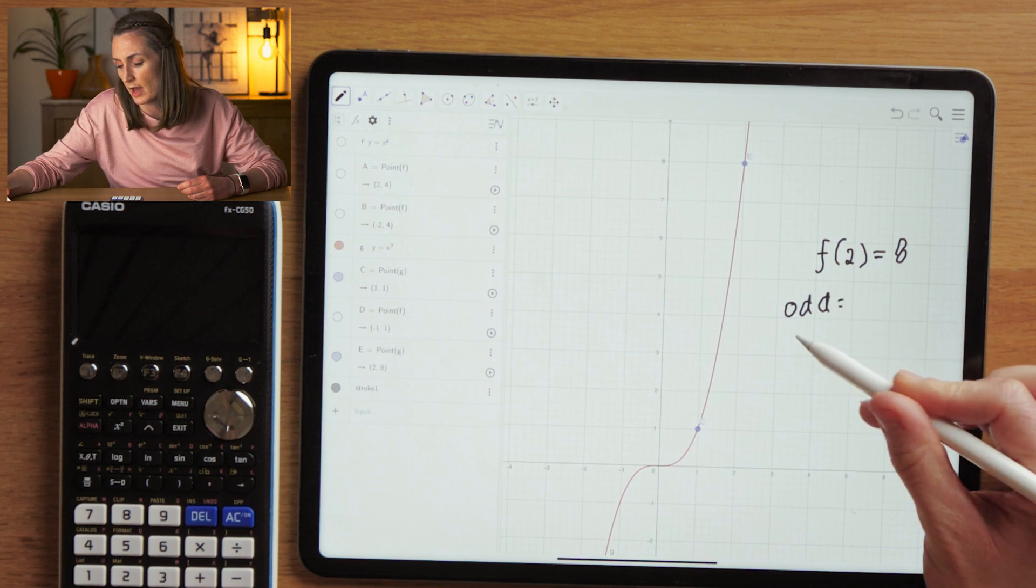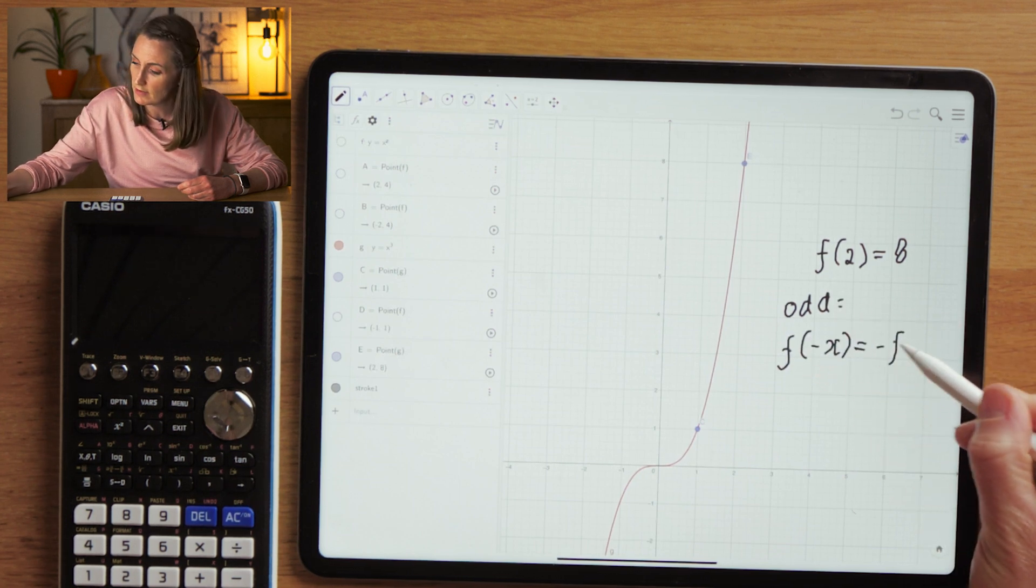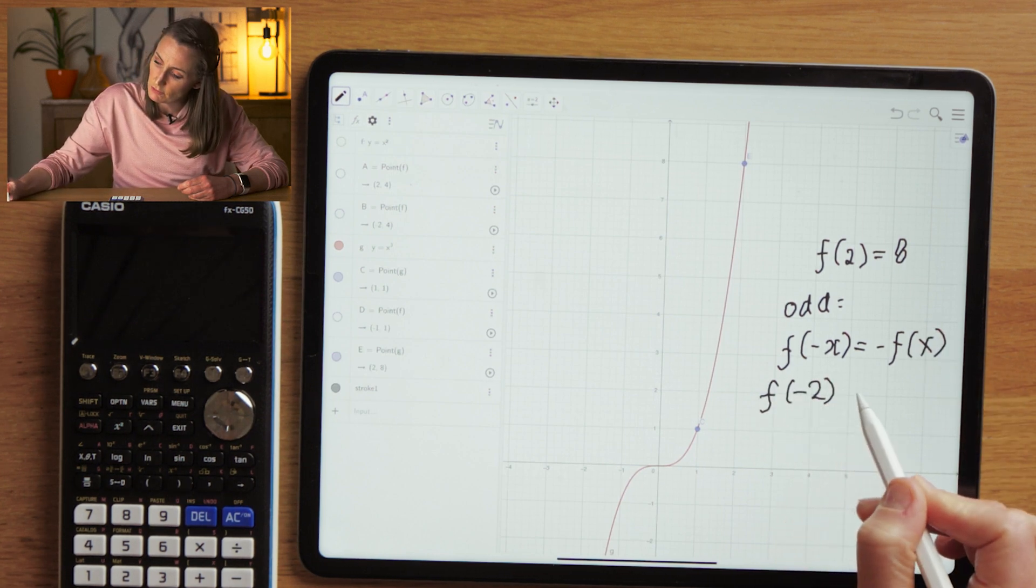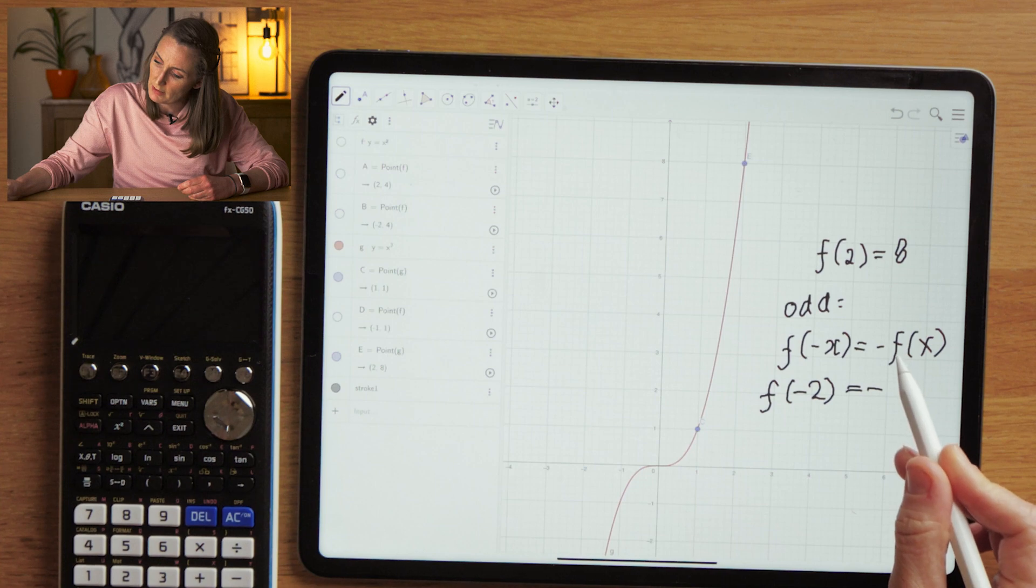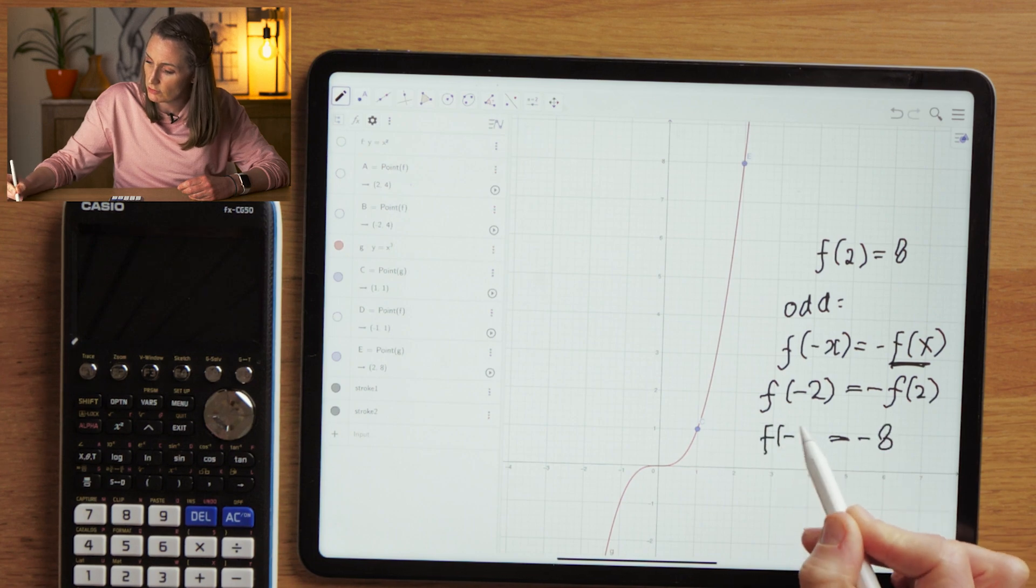We know this is an odd function, and an odd function has the rules that f of minus x equals minus f of x. Okay, so where would we expect f of minus 2 to be? Well, it should be at minus whatever f of x was, so at minus f of 2. F of 2 is at 8, so f of minus 2 should be at minus 8.